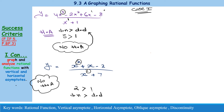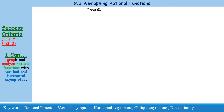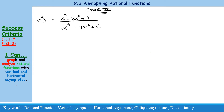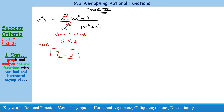Now let's do some exercises from Case 2. If the question is x cubed minus 8x squared plus 3 divided by x to the power 4 minus 7x squared plus 6, the degree of the numerator is 3 and the degree of the denominator is 4. Since 3 is less than 4, the horizontal asymptote is at y equals 0.